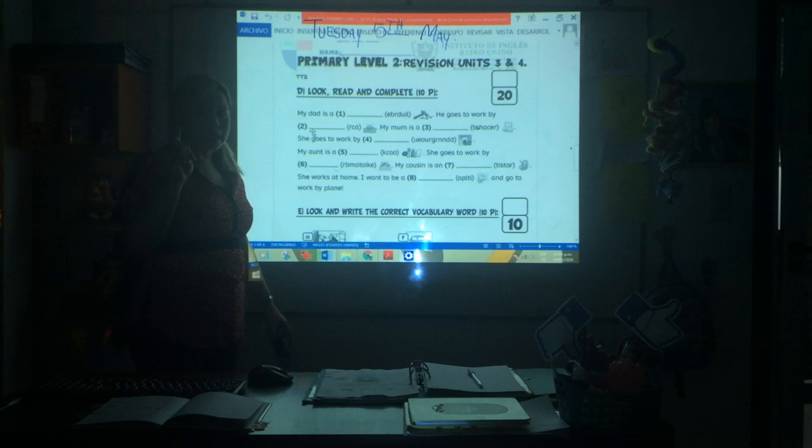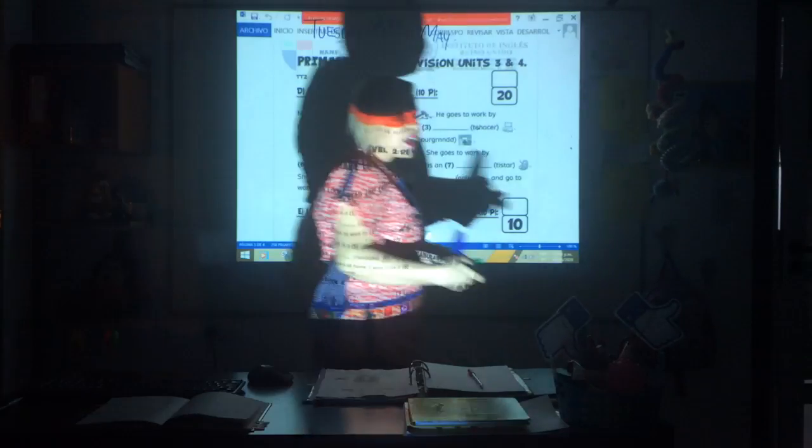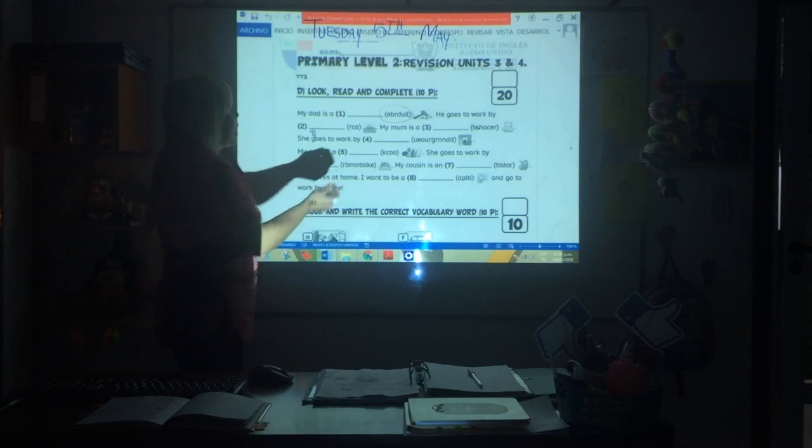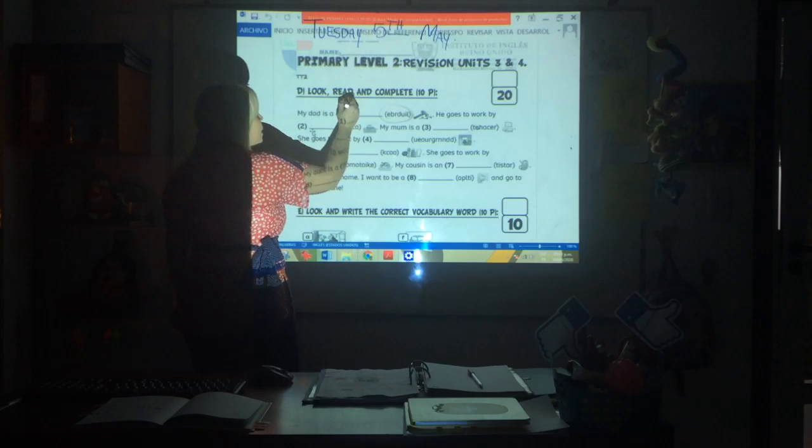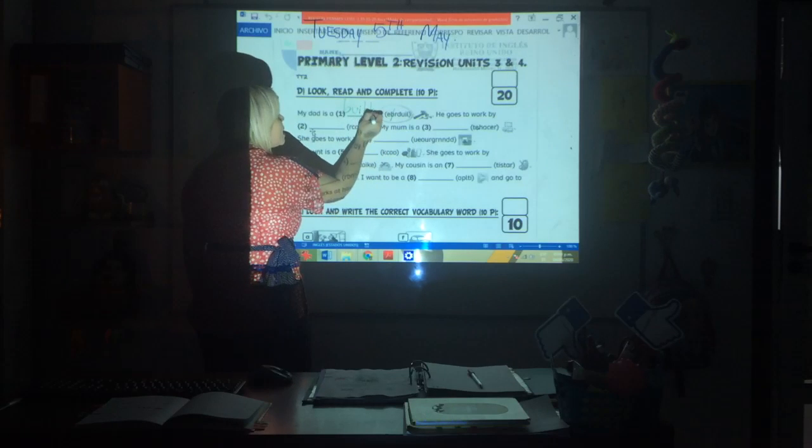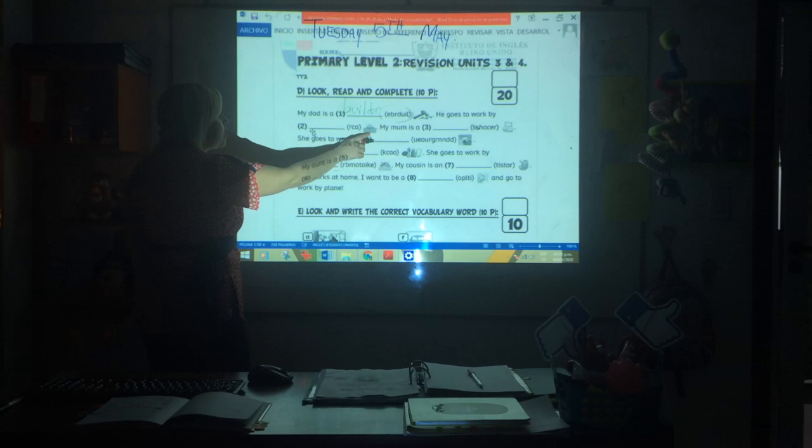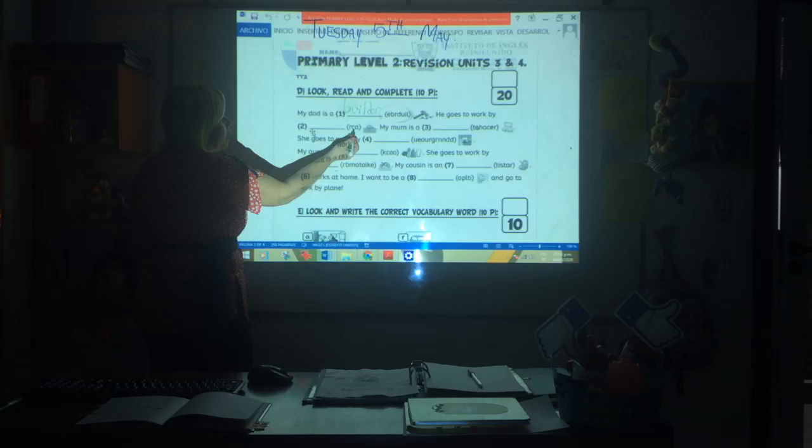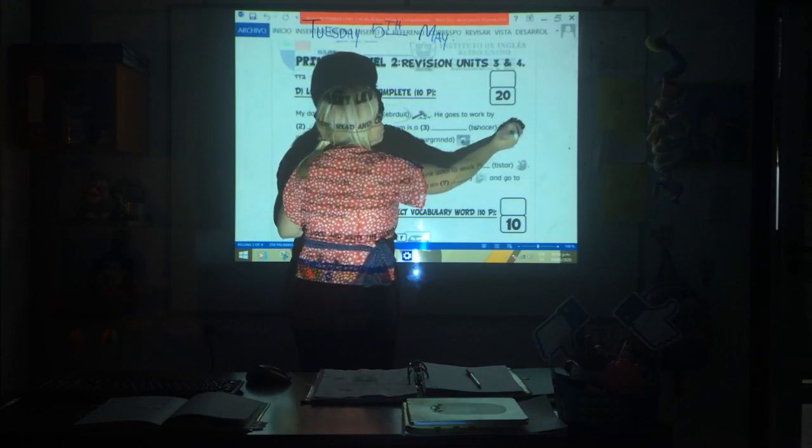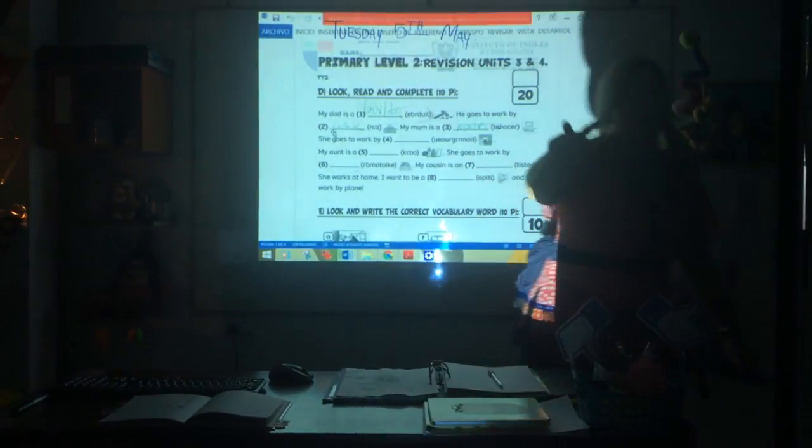Look, read and complete. Attention to this exercise. My dad is, and it's all disordered. You have to form a profession that uses tools, that uses a hammer. What could it be that begins with B? Let me build the first one for you. Builder, a constructor. He goes to work by, and what does the little drawing say? It's formed with C, A, and R: car. My mom is, it's really easy, there's a blackboard. Teacher. It's disordered and you have to build it with two clues: letters and a drawing. Is it clear?